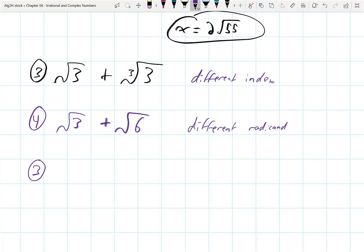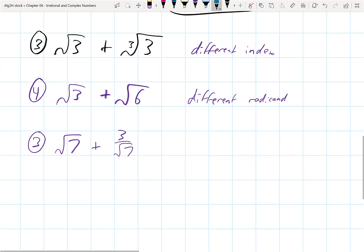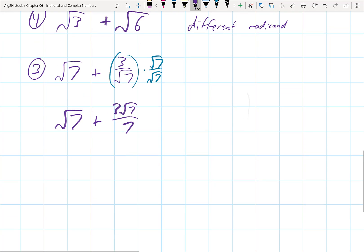Let's do another one. Let's do root 7 plus 3 over root 3. I don't know if we can add these, well I do know, but you wouldn't know if we can add these unless you actually took the time to rationalize this 3 over root 7 by multiplying it by root 7 over root 7. And if you do that, you're going to get root 7 plus 3 root 7 over 7.